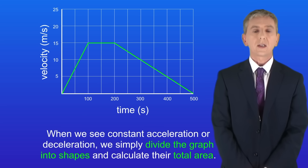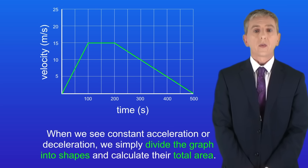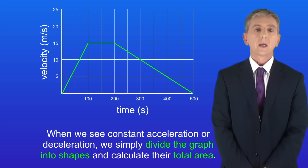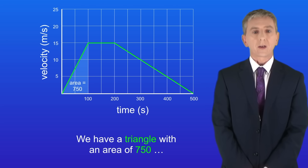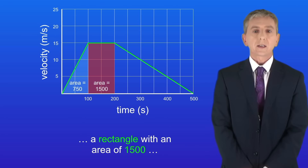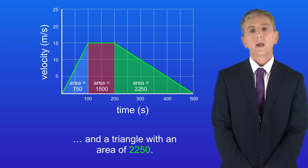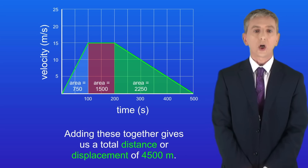When we see constant acceleration or deceleration, we simply divide the graph into shapes and calculate their total area. We have a triangle with an area of 750, a rectangle with an area of 1500, and a triangle with an area of 2250. Adding these together gives us a total distance or displacement of 4500 meters.